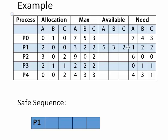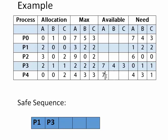After fulfilling P3's request, P3 releases its allocated resources, so our new available becomes 5 plus 2 = 7, 3 plus 1 = 4, and 2 plus 1 = 3. We add P3 to the safe sequence. Next, P4 requires 4 3 1 and we have 7 4 3, so we can clearly complete its need. After completion, P4 releases its allocated resources, making available 7, 4, and 5.